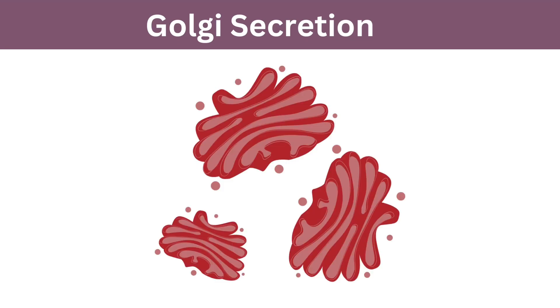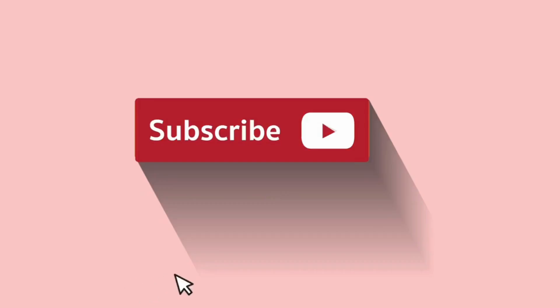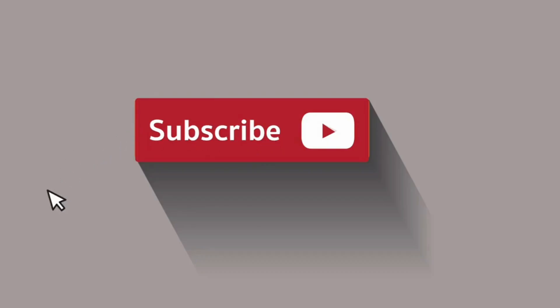The Golgi apparatus plays a central role in cellular function by processing, sorting, and packaging molecules essential for cell survival. Thank you for joining me today. Do subscribe to my channel to learn more — stay curious, and until next time, happy learning!